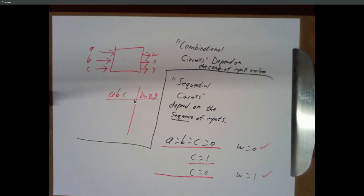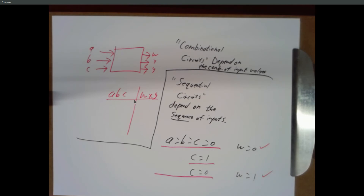Most of the interesting circuits are sequential. Combinational circuits we can just build with a big multiplexer — tie the inputs to ones or zeros and you've got any combinational circuit you want; it's just a big lookup table. But sequential circuits let us build things like computers. A laptop is a classic sequential circuit — pressing the space bar does something that depends entirely on what you've done before.